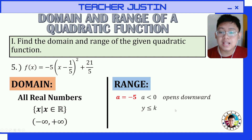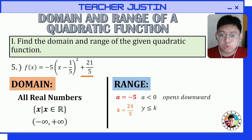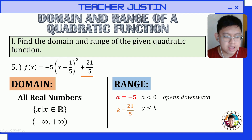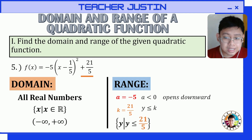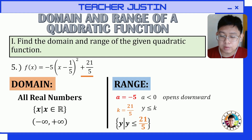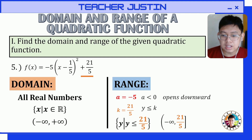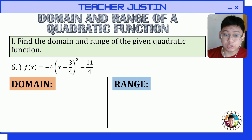Since the vertex is at the highest point, all values of y will be less than or equal to the maximum value k. The value of k is 21/5, which we can see as the constant in the vertex form. In set-builder notation: y such that y is less than or equal to 21/5. In interval form, since the graph goes downward, it is from 21/5 going to negative infinity. That is our domain and range.